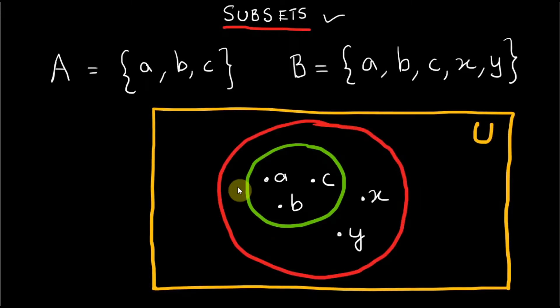Here is a Venn diagram representation of subset. Since A is subset, it is inside of a bigger circle representing set B.